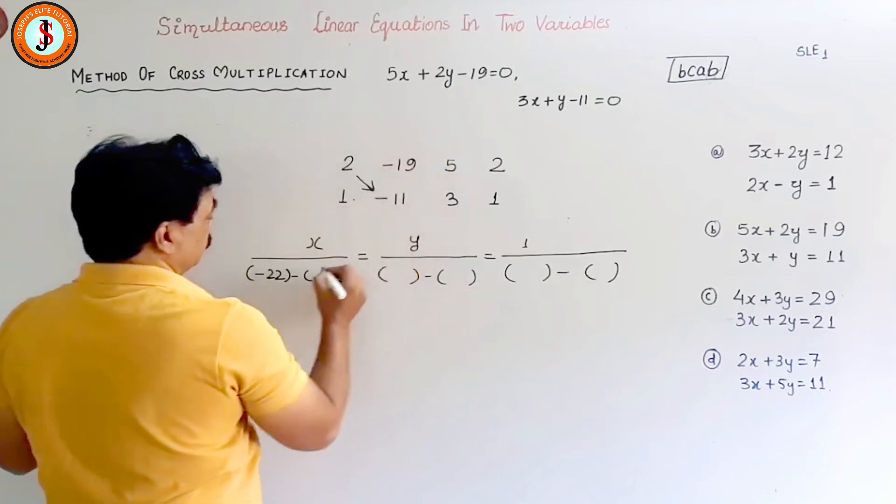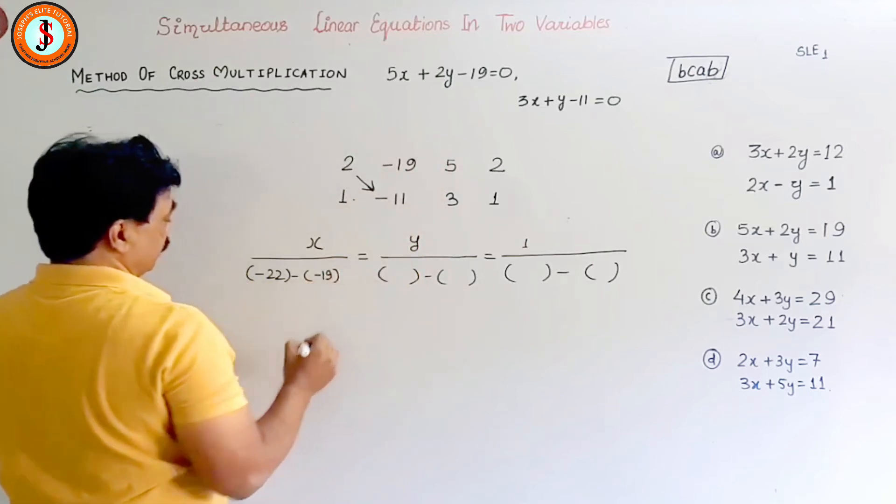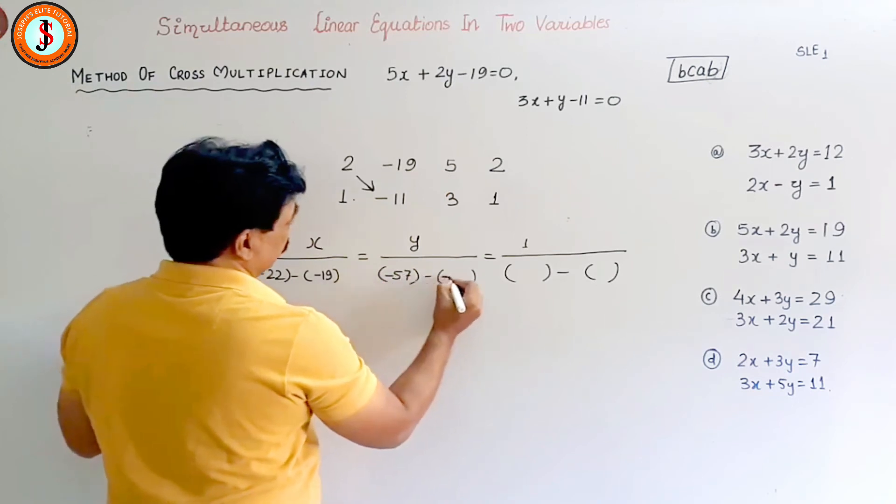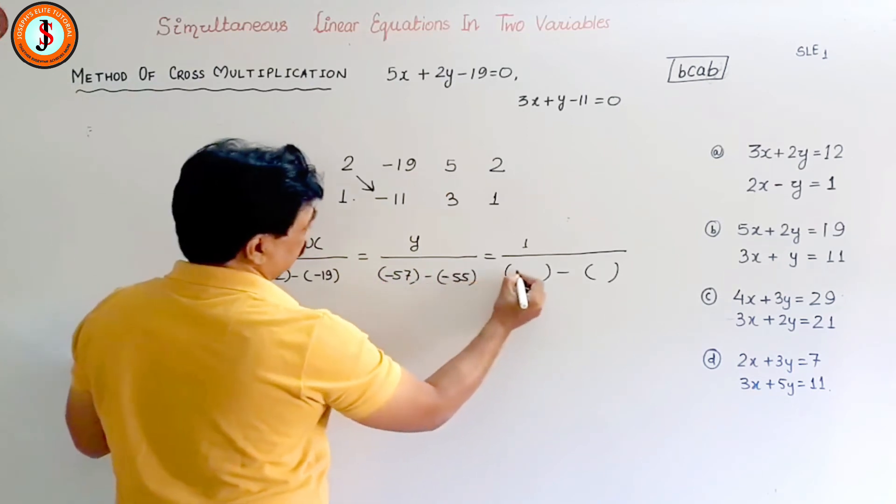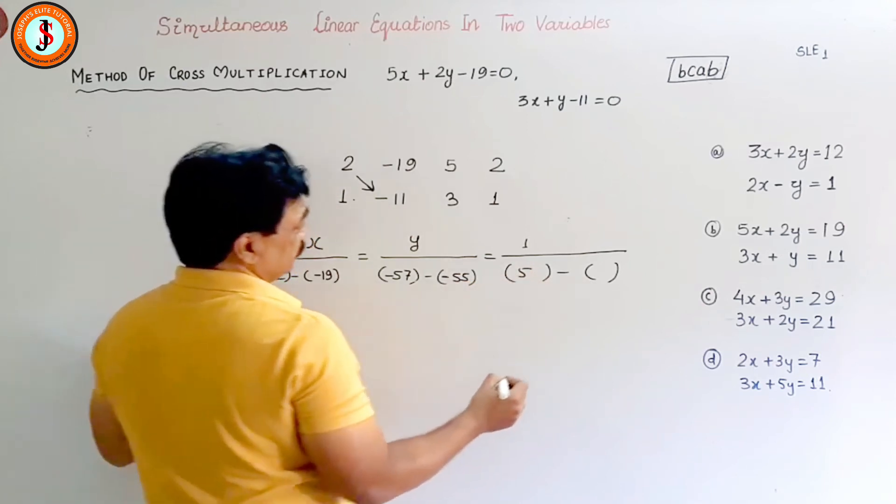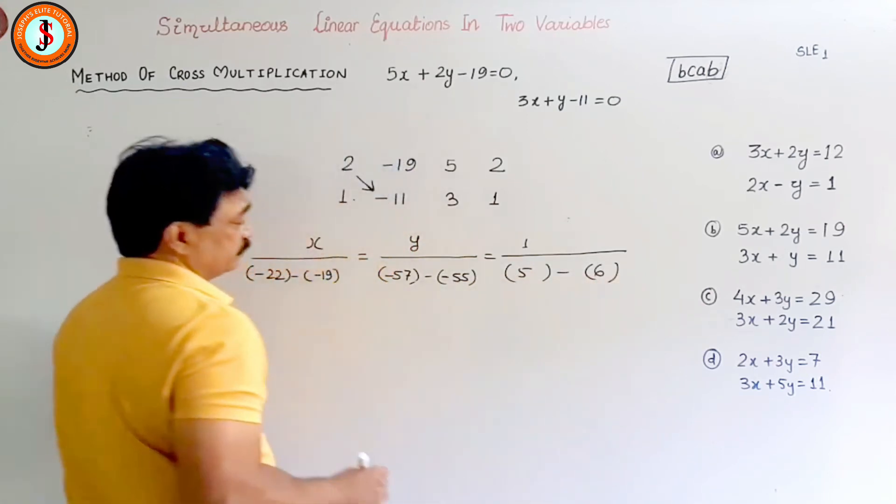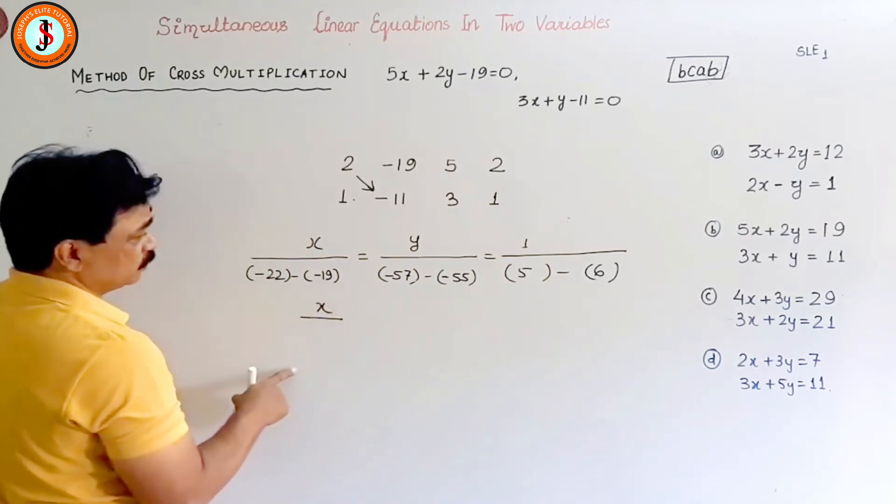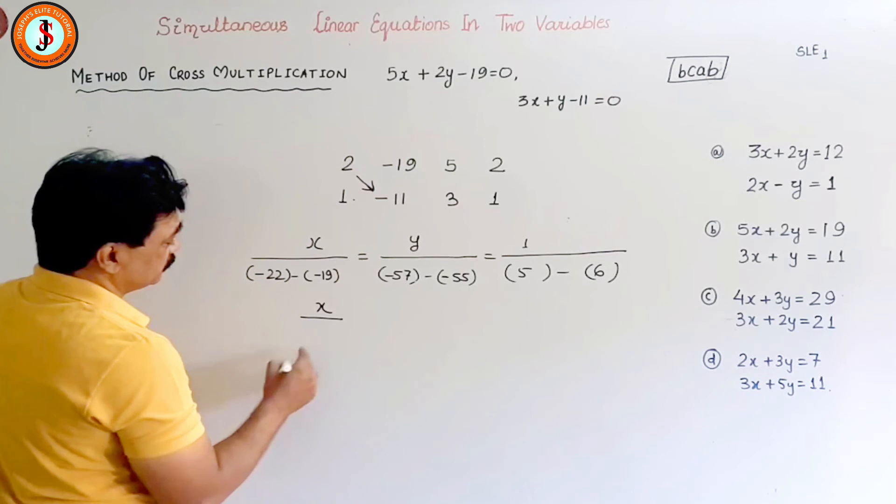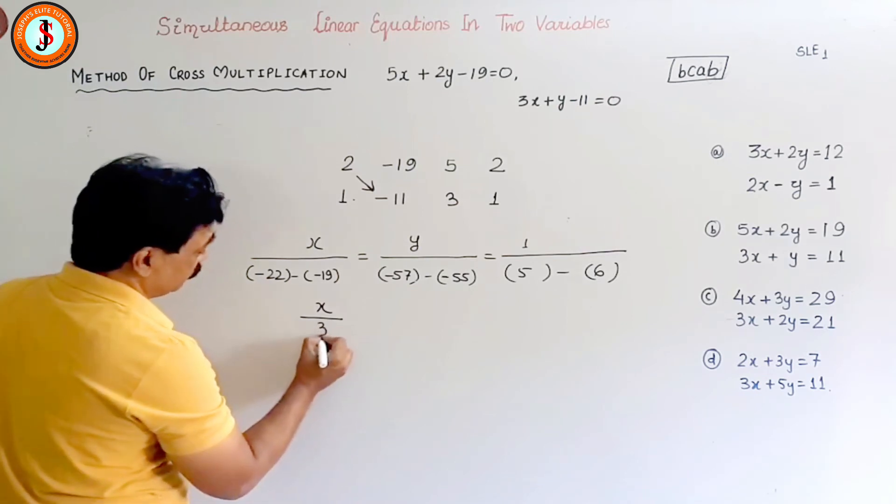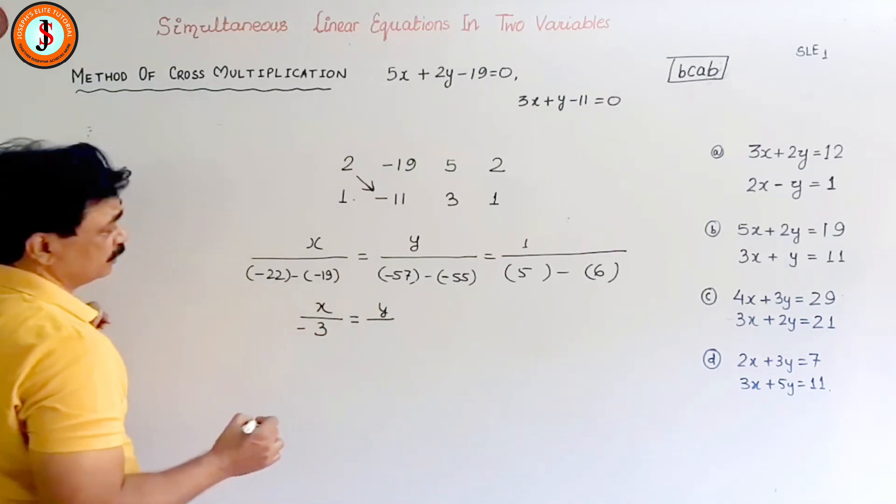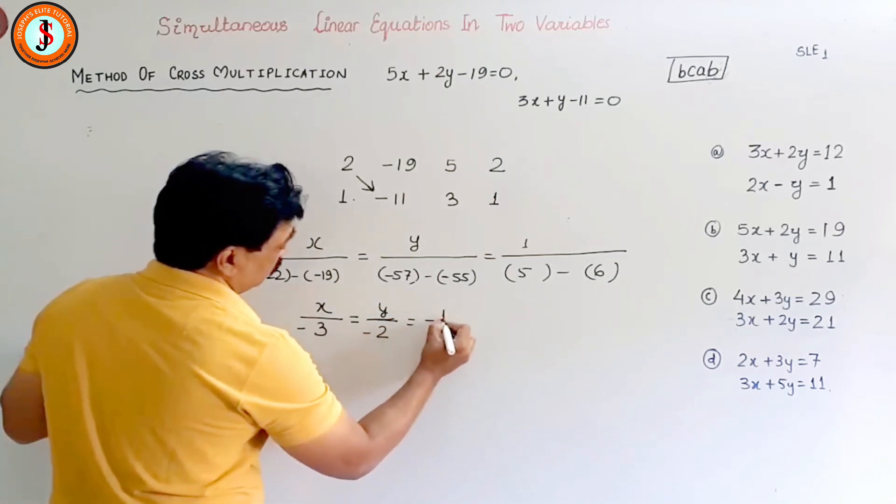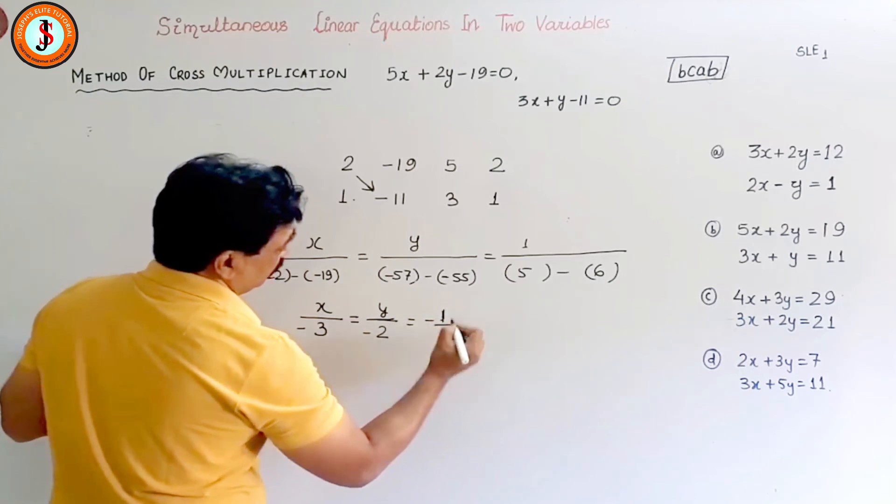So I multiply this. Always top to bottom is x, and bottom to top is y. So x: minus 22, minus 22 and plus 19 will be... minus 3, I suppose, yes. And then minus 57 plus 52 will be minus 5, and y this will become minus 1.